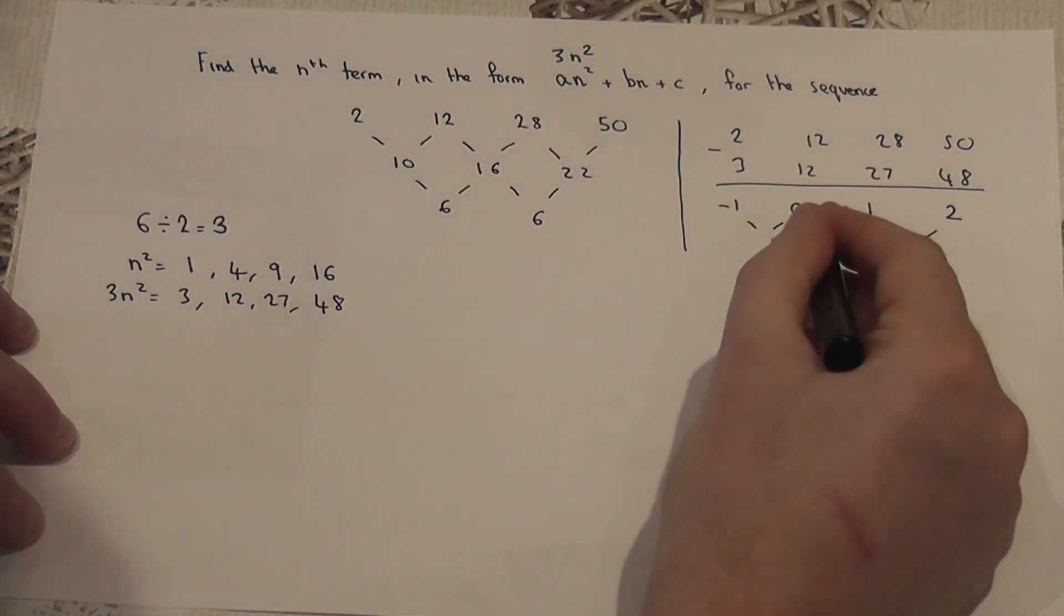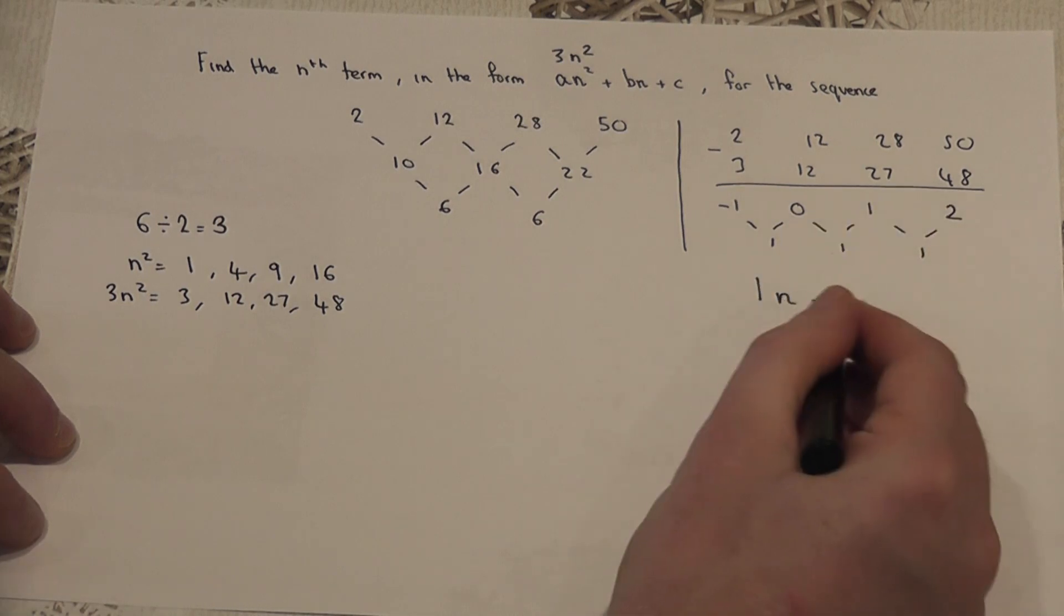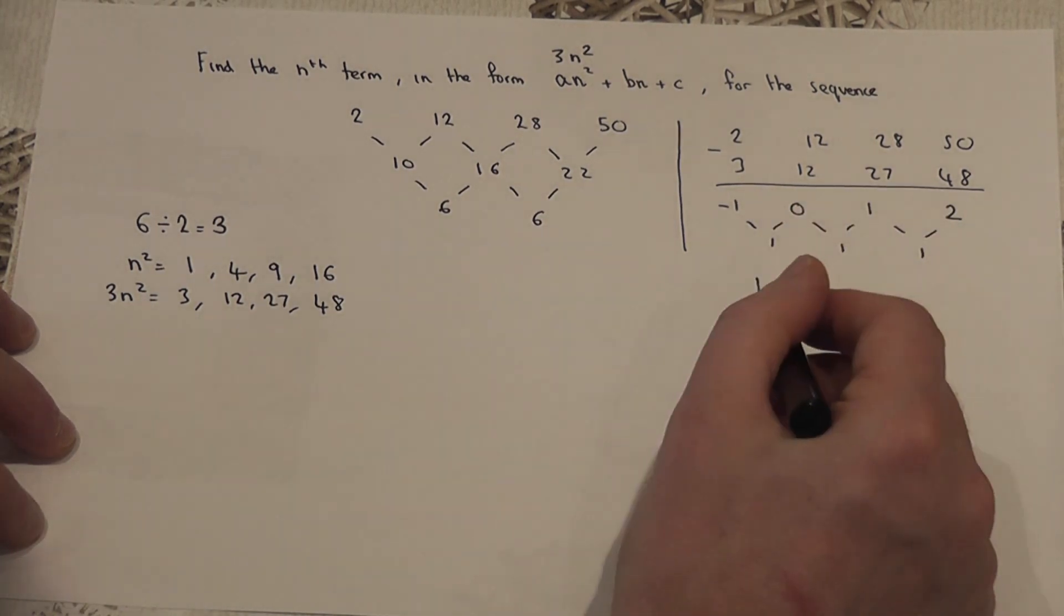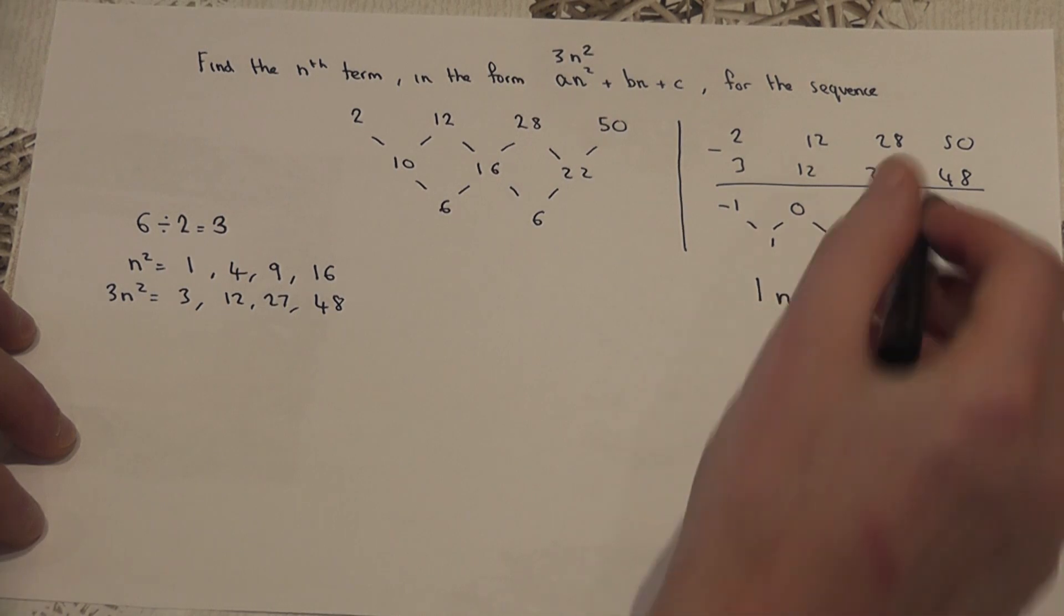To show this works, for the second term, 1 times 2 is 2, take away 2 is 0. For the third term, 1 times 3 is 3, take away 2 is 1.